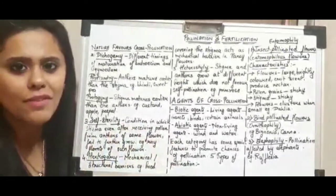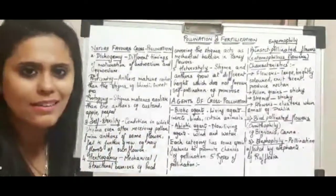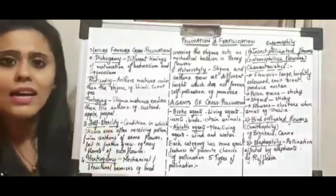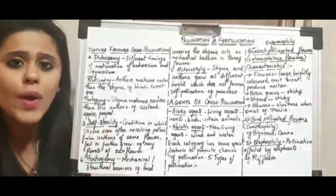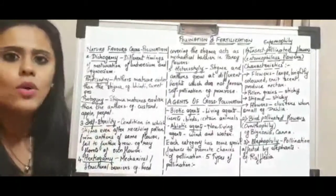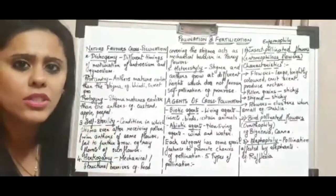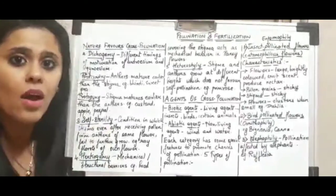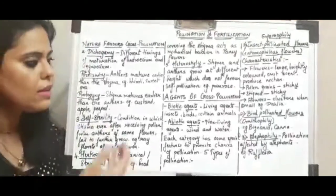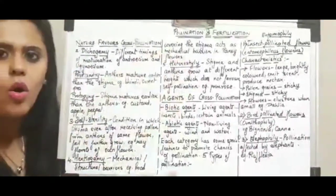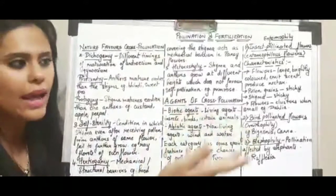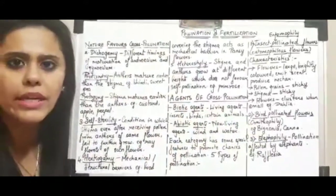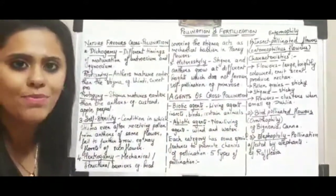That is called self-sterility. This is the third condition where strictly no self-pollination takes place. Obviously, the flower will have to go out and search for a cross-pollinating flower.